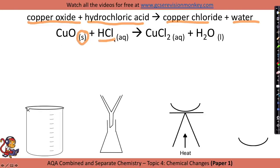We're going to add that to acid and the salt that we make is copper chloride. This state symbol means it's aqueous, which means dissolved in water. So if we wanted to make copper chloride, we need to identify that the acid we need was hydrochloric acid, because they make chlorides, and suggest a sensible base like copper oxide to react it with.